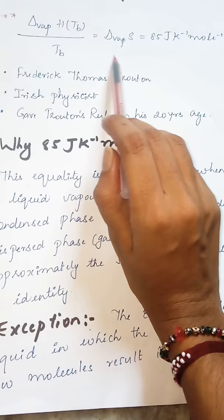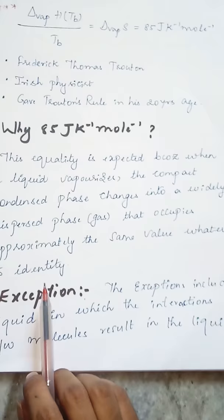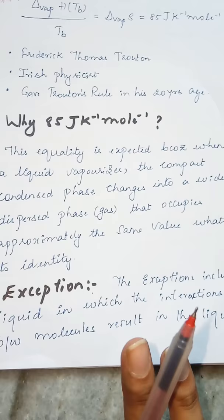But there are exceptions even to Trouton's Rule. The exception says when there is any liquid such as water molecule in that hydrogen bonding is present. Because of the hydrogen bonding, there is a proper orderly arrangement in that particular molecule.